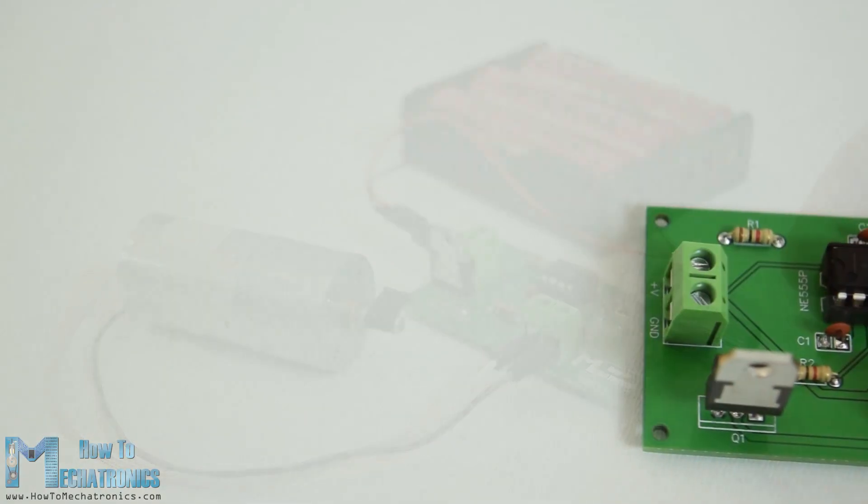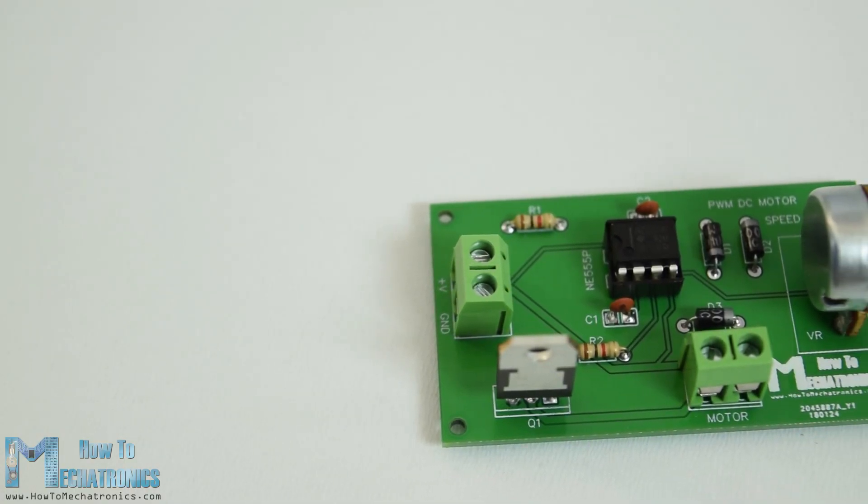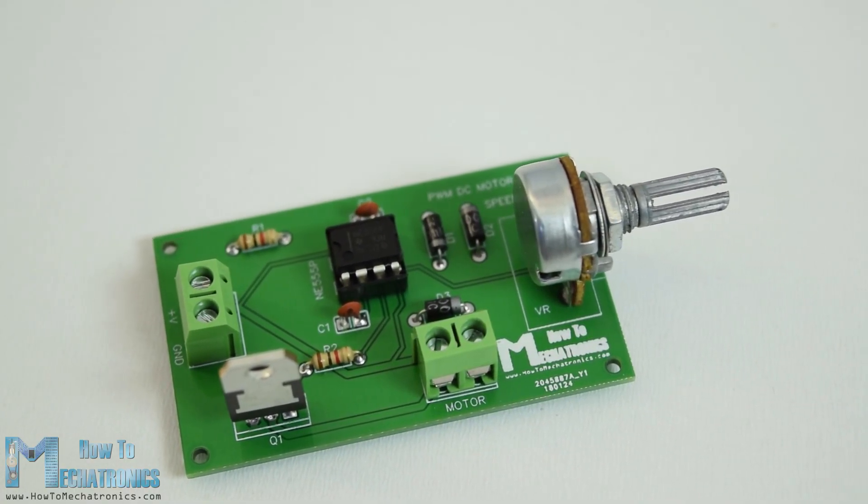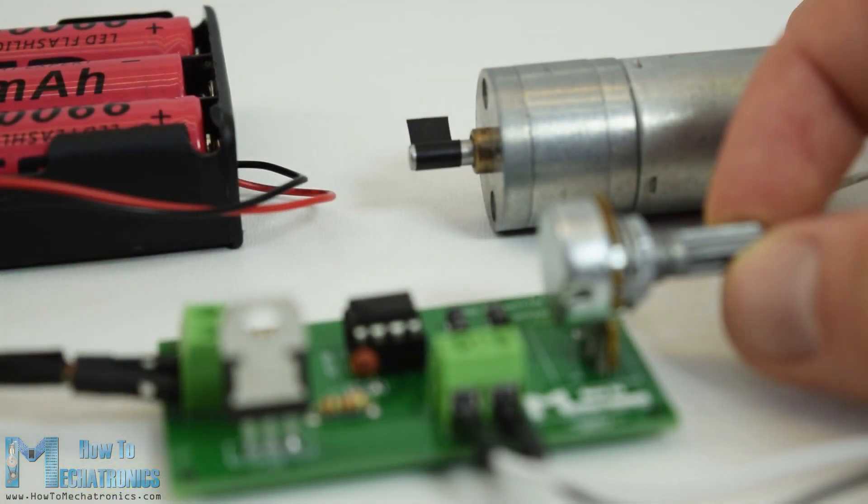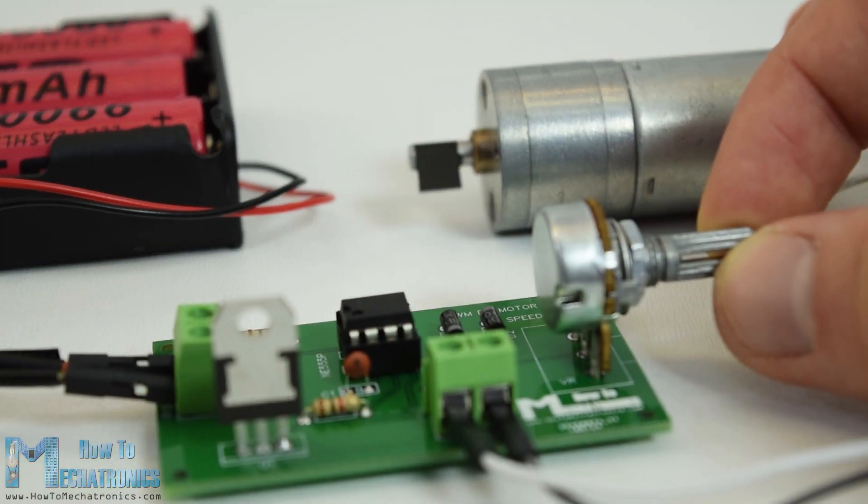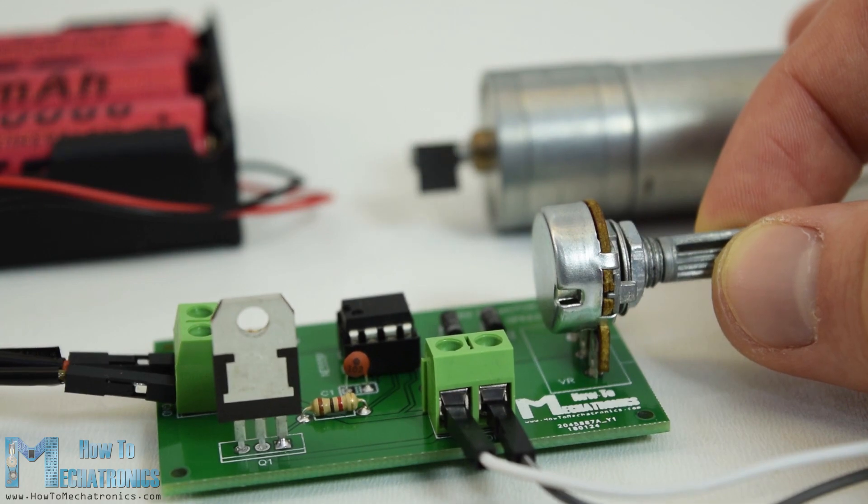We will take a detailed look at how the 555 timer PWM generator circuit works, how to use it for controlling the speed of a DC motor, and how to make a custom PCB for it.